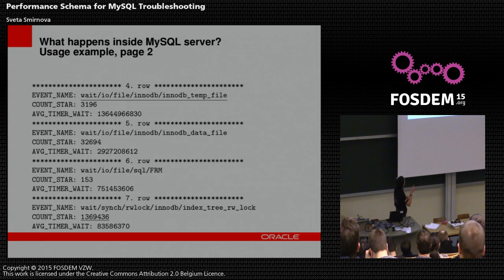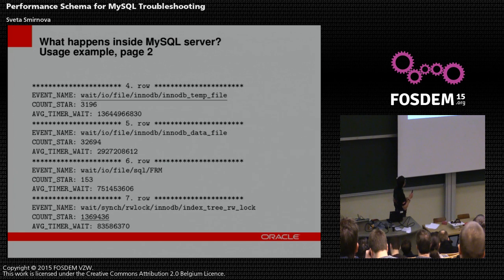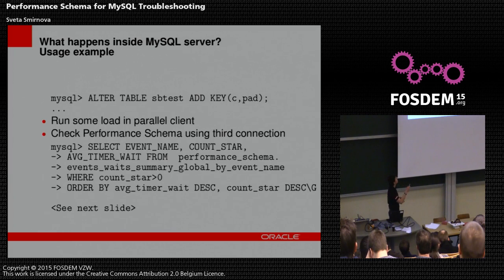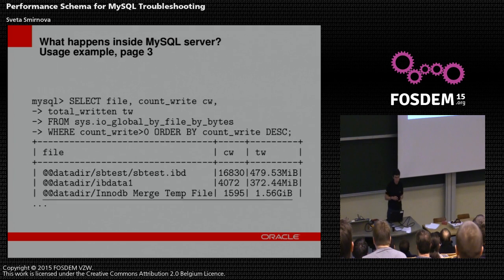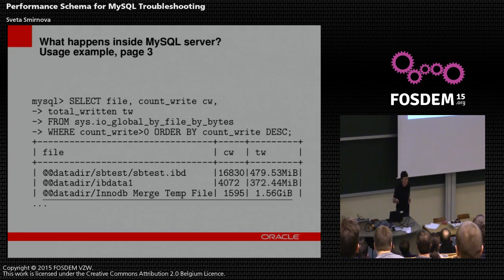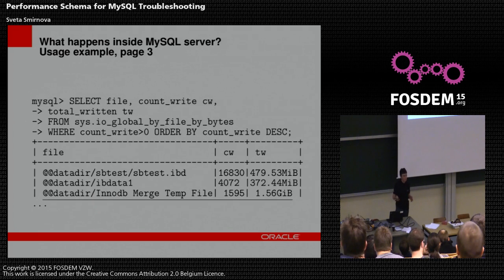We see counts, maximum, and average timer waits. On the first load, something happens with the InnoDB temporary file, and here the count shows a maximum read on the redo log for index 3. We are adding a key here. To understand what happens, the sys schema view IO_GLOBAL_BY_FILE_BY_BYTES clearly shows a data InnoDB merge file of 156 gigabytes, while the size of our table is only 480 megabytes. Many of you may have known the alter was slow, but now it's proved why it's slow.